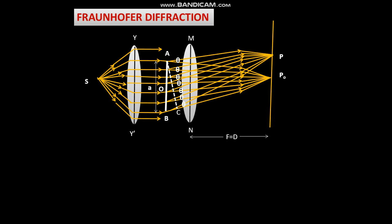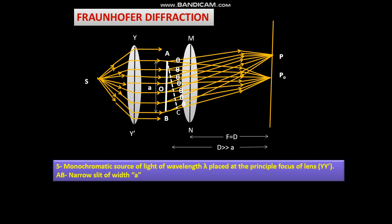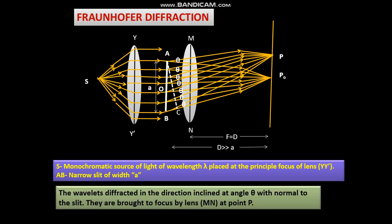F is almost equal to D since D is much greater than A. So S is the monochromatic source of light of wavelength lambda placed at the principal focus of the lens. AB is a narrow slit of width A. The wavelets diffracted in the direction inclined at an angle theta with normal to the slit are brought to focus by lens MN at point P.